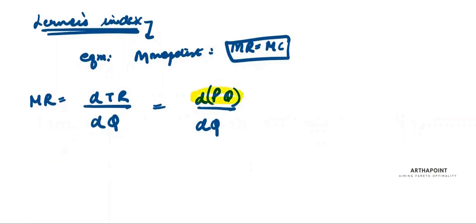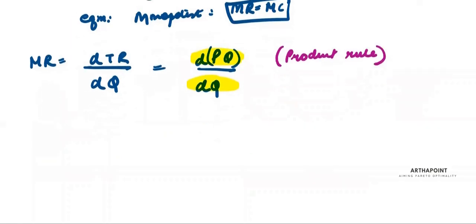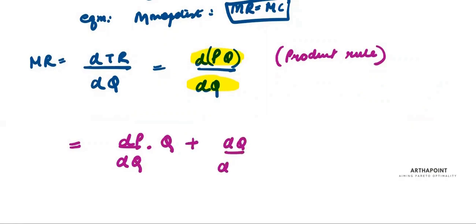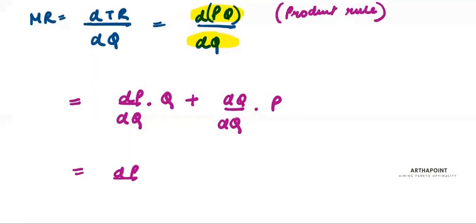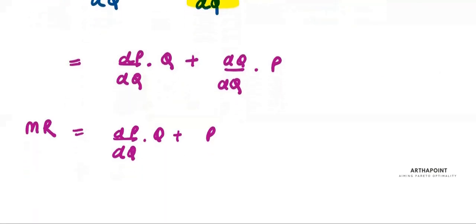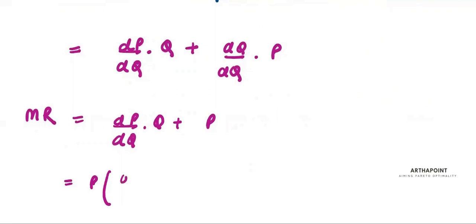Because we are differentiating total revenue with respect to output, we must apply the product rule. Applying the product rule: differentiation of the first function into the second as it is, plus differentiation of the second into the first as it is. So MR equals dP/dQ times Q plus P. Taking P common, this becomes dP/dQ times Q/P plus one.